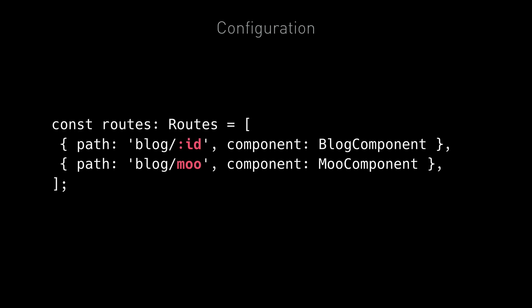So in the configuration in front of you, if we visited slash blog slash moo, we would actually show moo component, even though slash blog slash moo also matches blog component. That's because the non-parameterized slash blog slash moo route takes priority over the parameterized slash blog slash ID route.